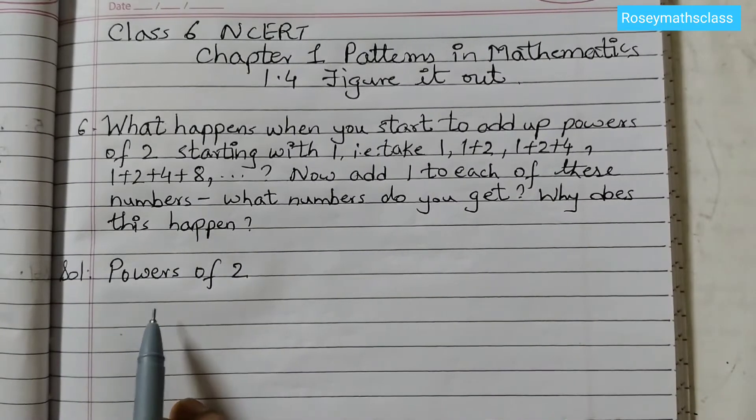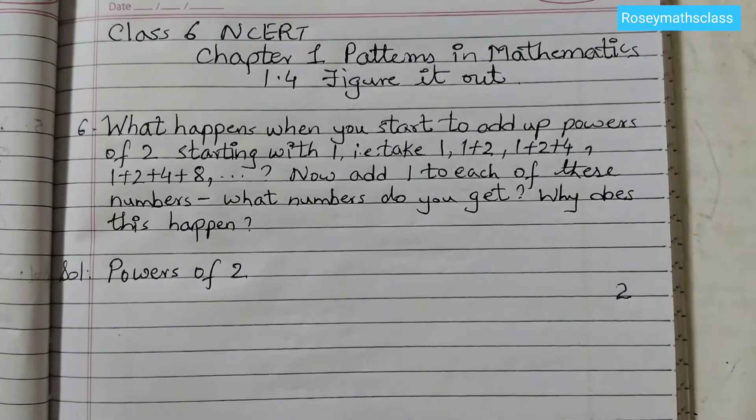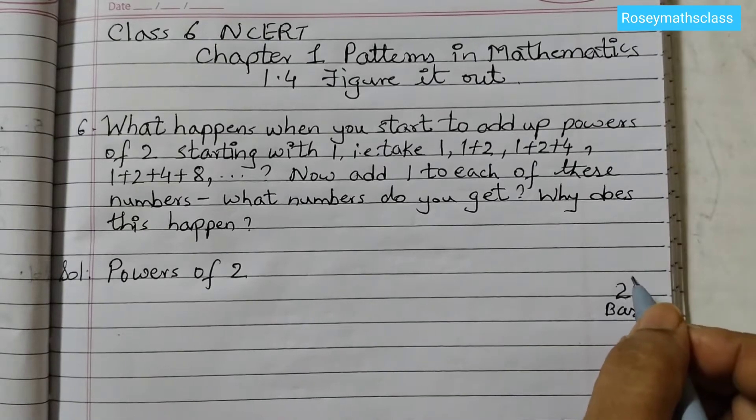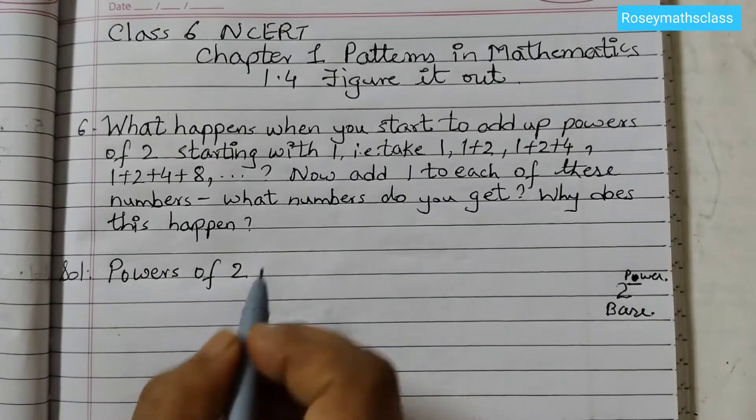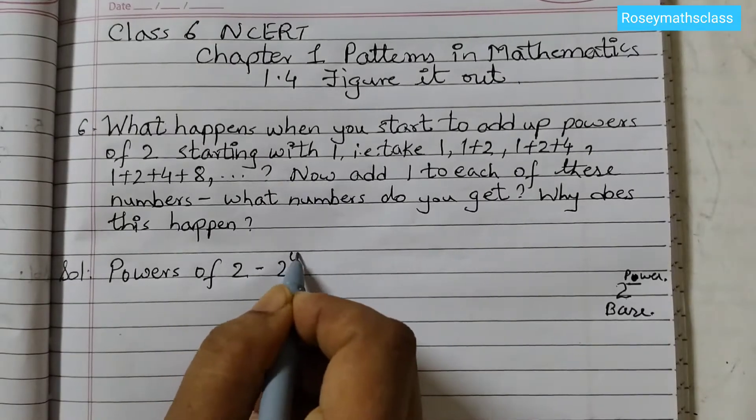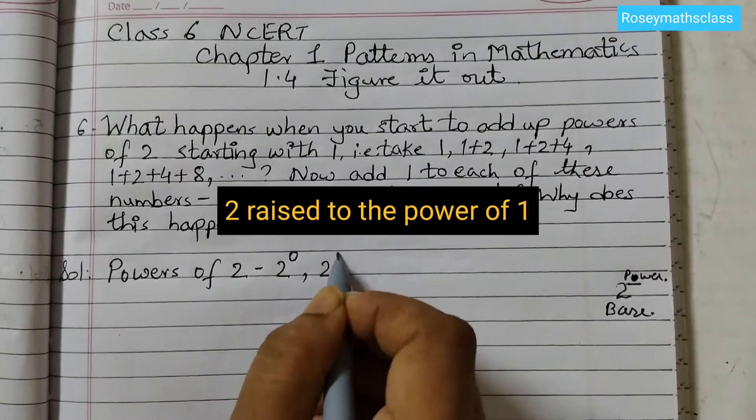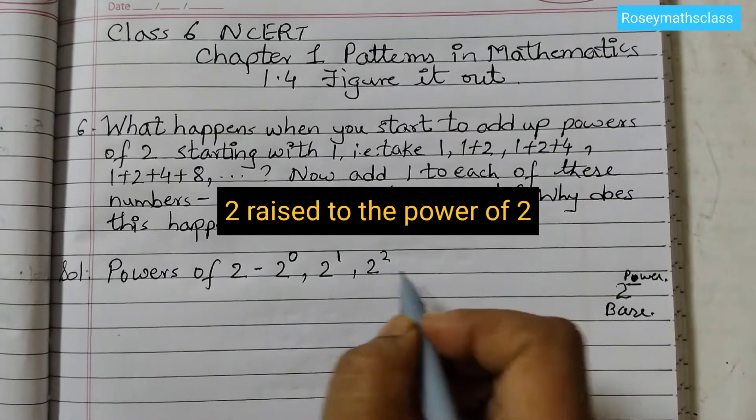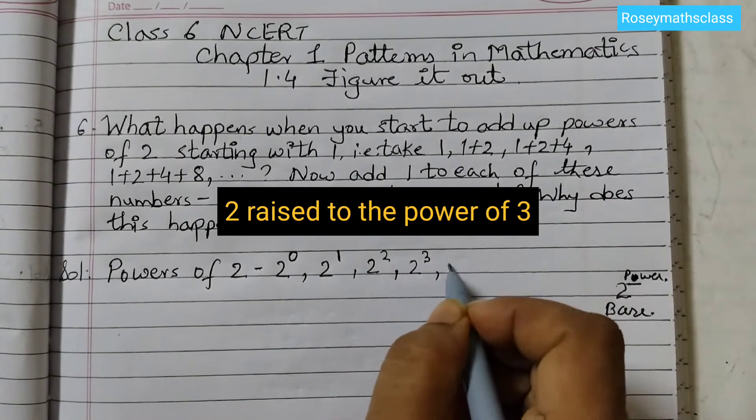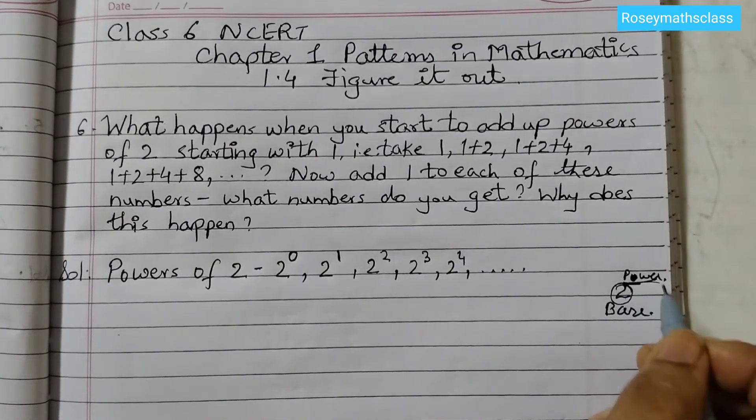So first you must know what are powers of 2. So for 2 here, 2 is the base. We call this as the base. And any number, the superscript like here any number we write that is our power. So we write the power here. Like for example powers of 2, first one we can write 2 to the power of 0, 2 raised to the power of 1, 2 raised to the power of 2, 2 raised to the power of 3 and so on. So these are called powers of 2. This is the base, this is the power.